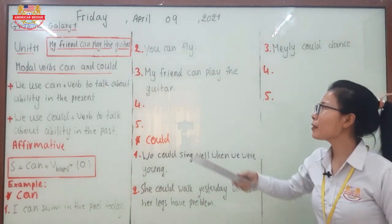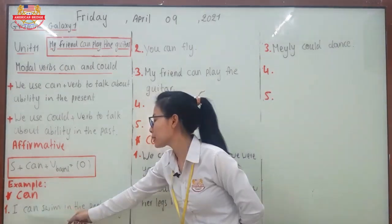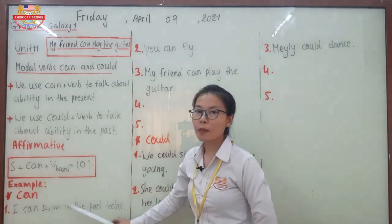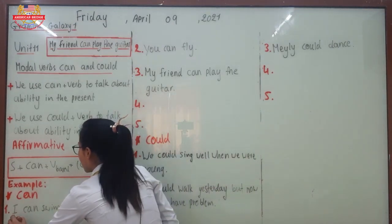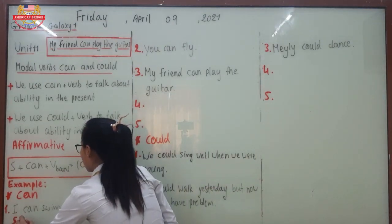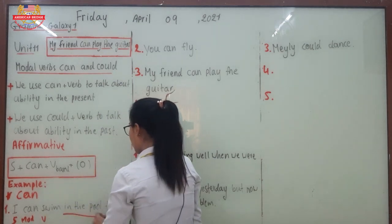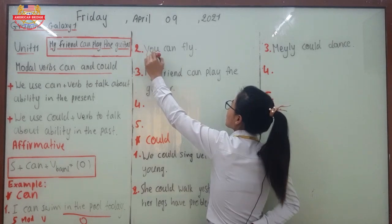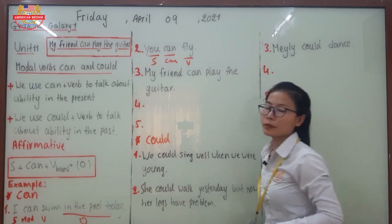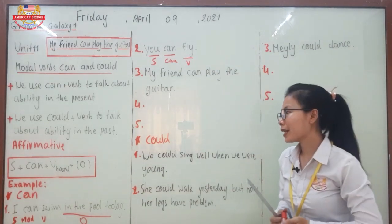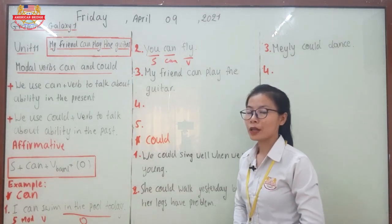Number two: 'You can fly.' Here we have subject plus can plus verb, with no object. This confirms that the object is optional — sometimes we use it, sometimes we don't. The sentence is still correct and complete without the object.